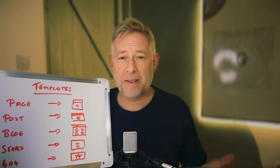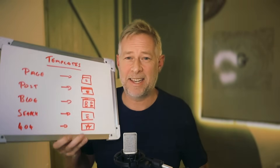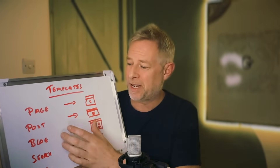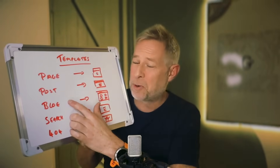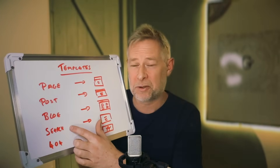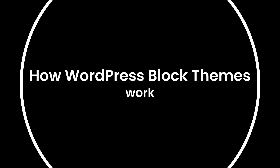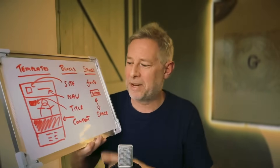When you use a WordPress block theme, you get automatic access to edit all your important templates — your page templates, your post templates, your blog template, your search results template, and your 404 template. WordPress block themes revolutionize the way websites are built and designed, simplifying the process down to just three core elements: blocks, templates, and styles. Let's start with templates.